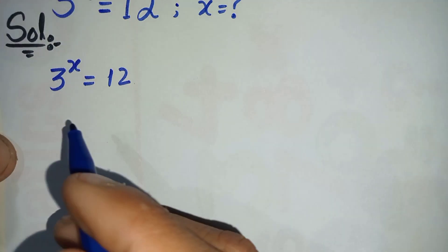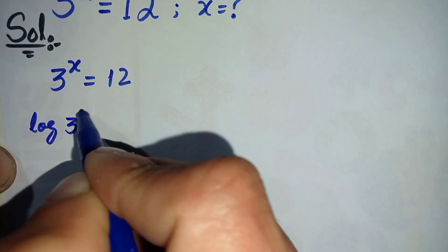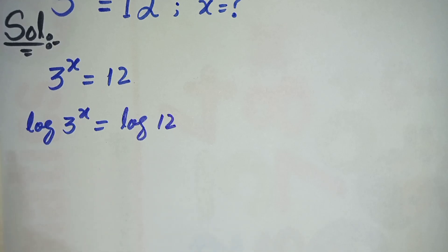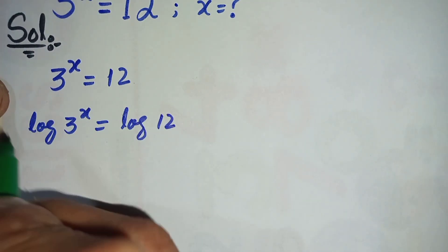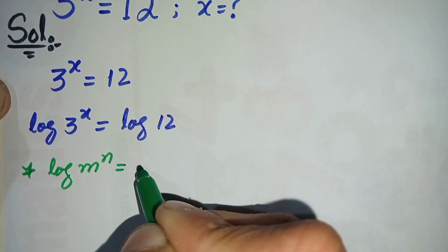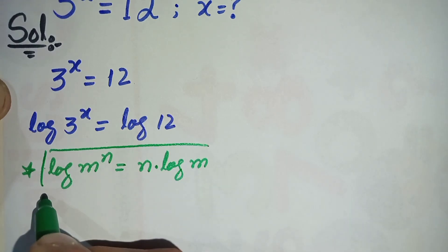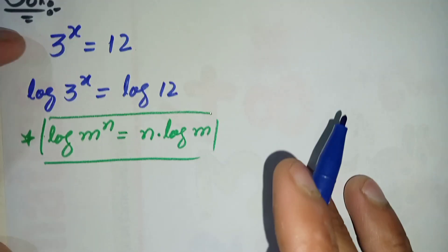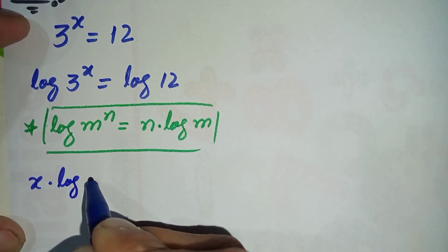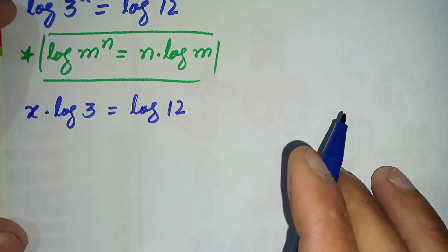My first approach is to take log on both sides. So it will become log of 3 raised to power x is equal to log of 12. Now on the left hand side we will use a famous log property: log of m raised to power n can also be written as n times log of m. Using this property, x will jump to the front of log of 3.